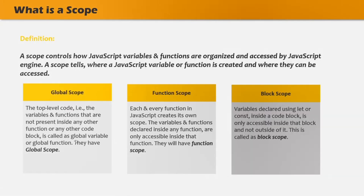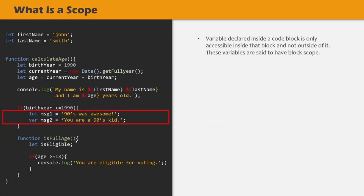By block, we mean everything created using curly braces. For example, when you write an if block, the body uses a set of curly braces, and that if block will create its own scope. Similarly, a for loop or while loop body uses curly braces, creating block scope. In this example, we have an if statement with curly braces — that opening and closing curly braces is called a code block, and it creates a block scope. Inside this if statement, we are creating two variables: message1 and message2.